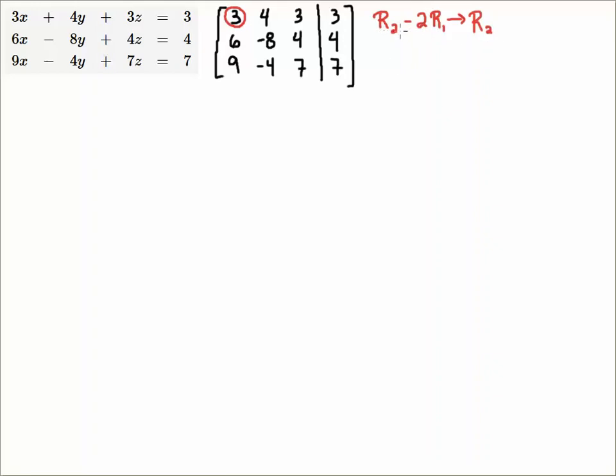So that's what this statement is telling me. I'm going to take R2 minus two times R1 and replace R2 in its entirety with that result. So when I do that I end up with a zero minus 16 minus two minus two.